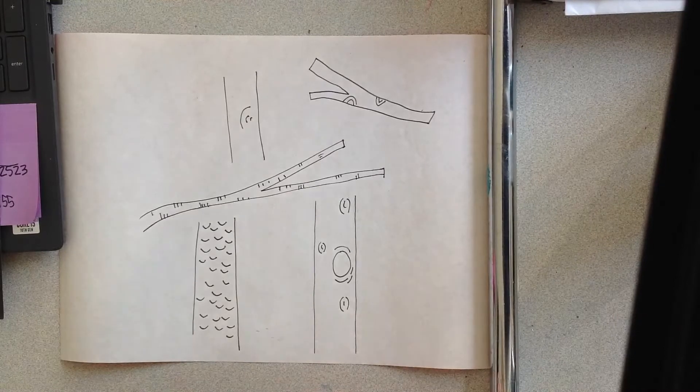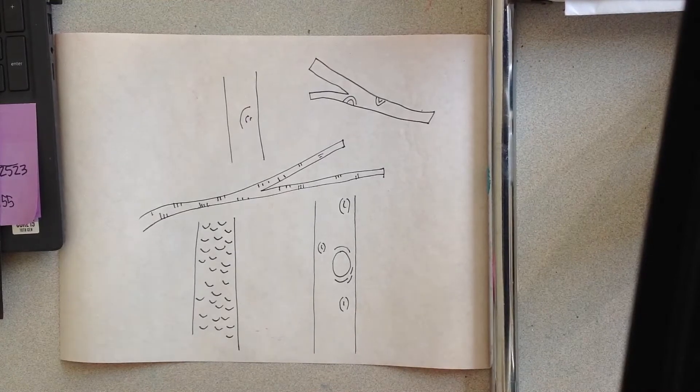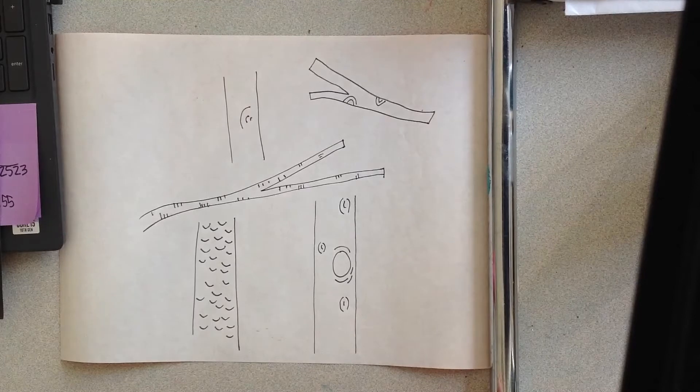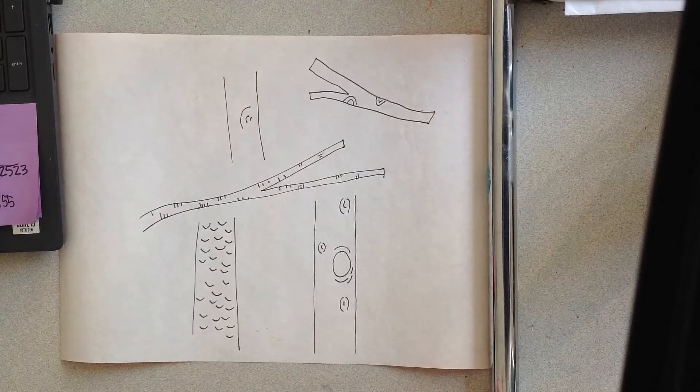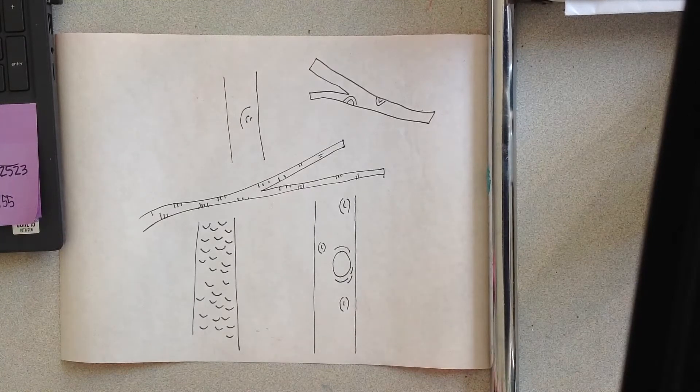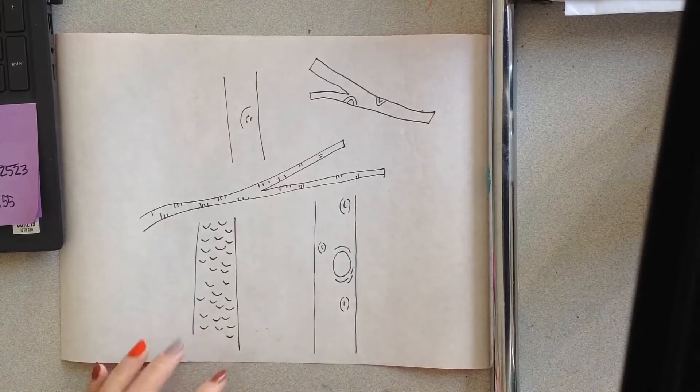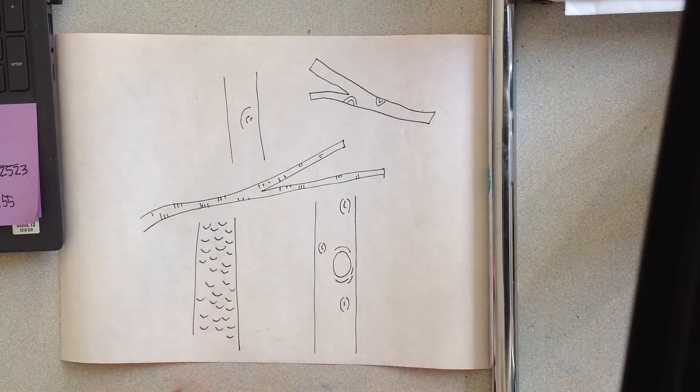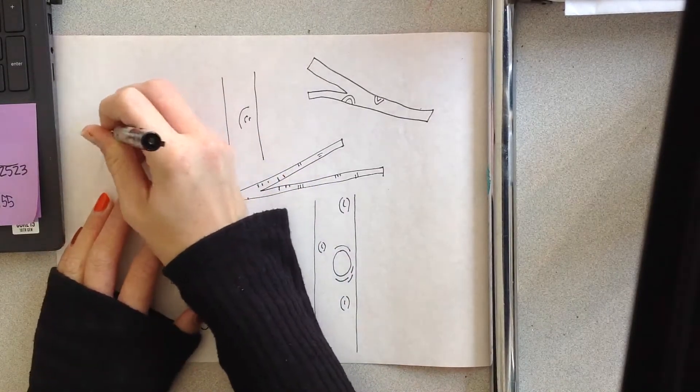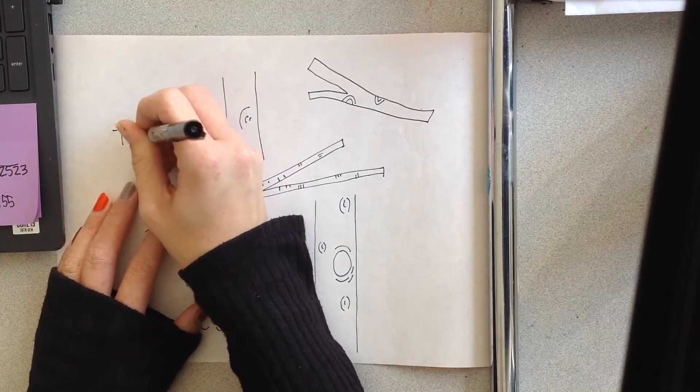One thing I get from the book is a crazy amount of texture. I see a lot of texture in all of those photos that really stands out to me. So let's talk a little bit about what texture is and how we can draw it.